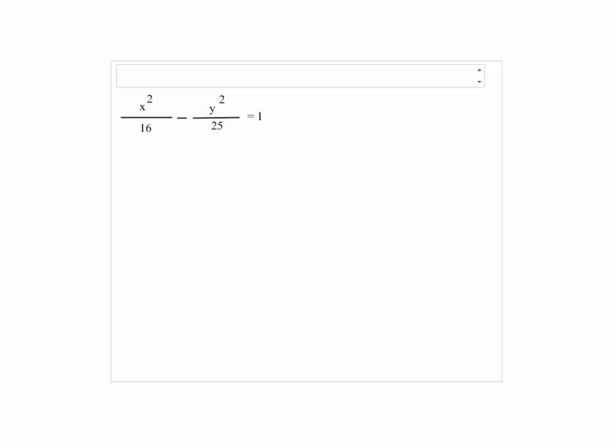Give the equation of the asymptotes and graph the hyperbola. x squared over 16 minus y squared over 25 equals 1.